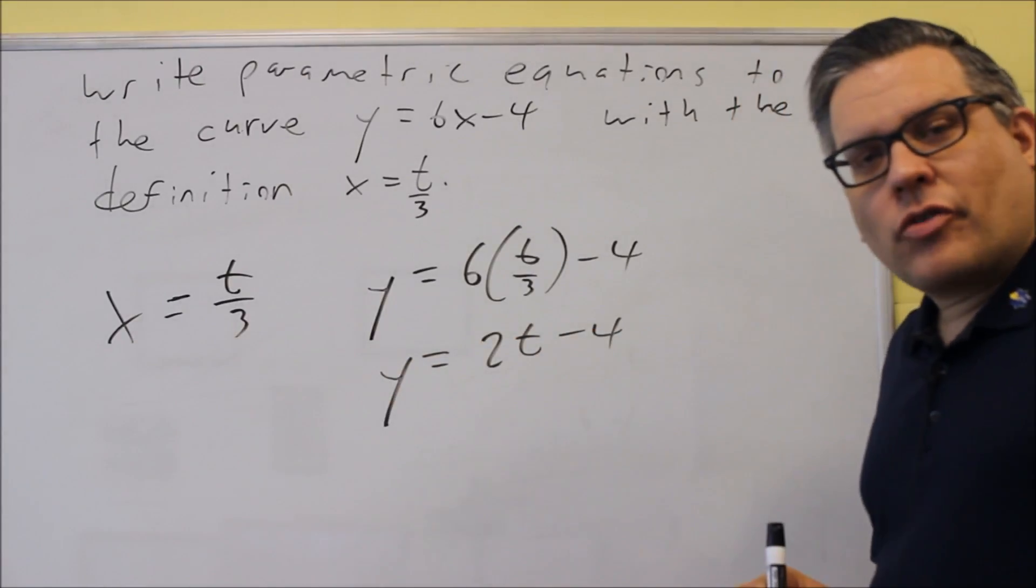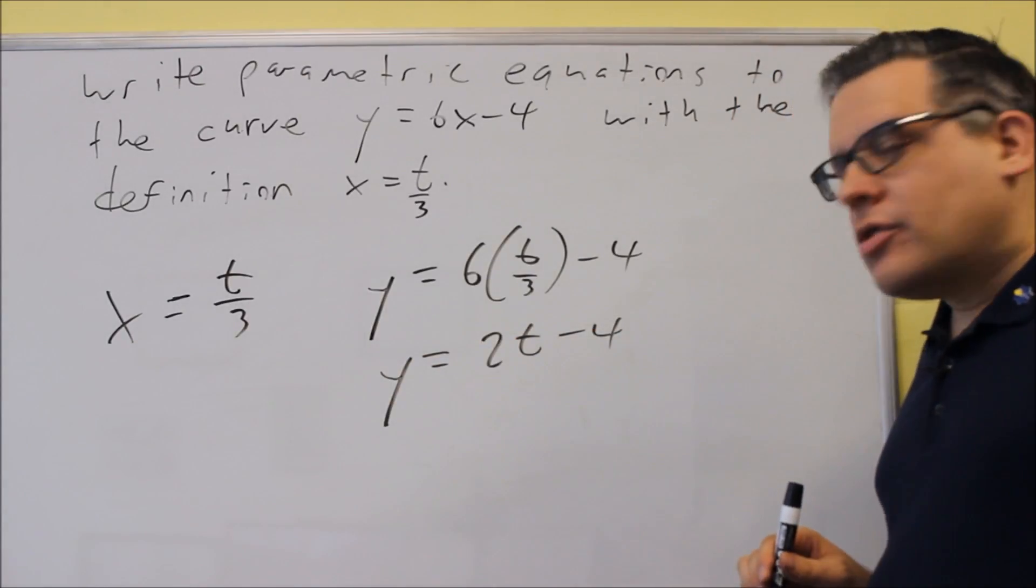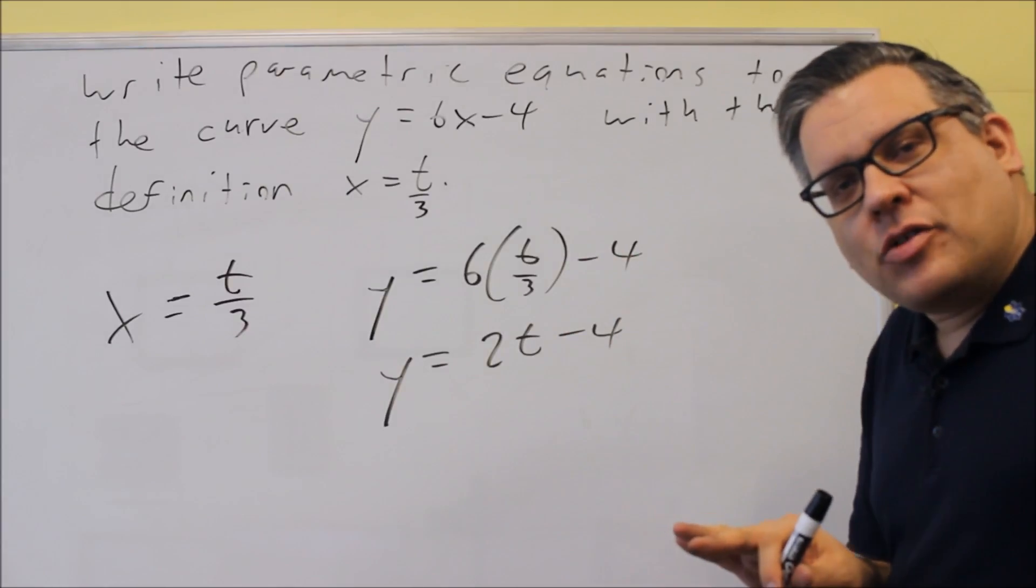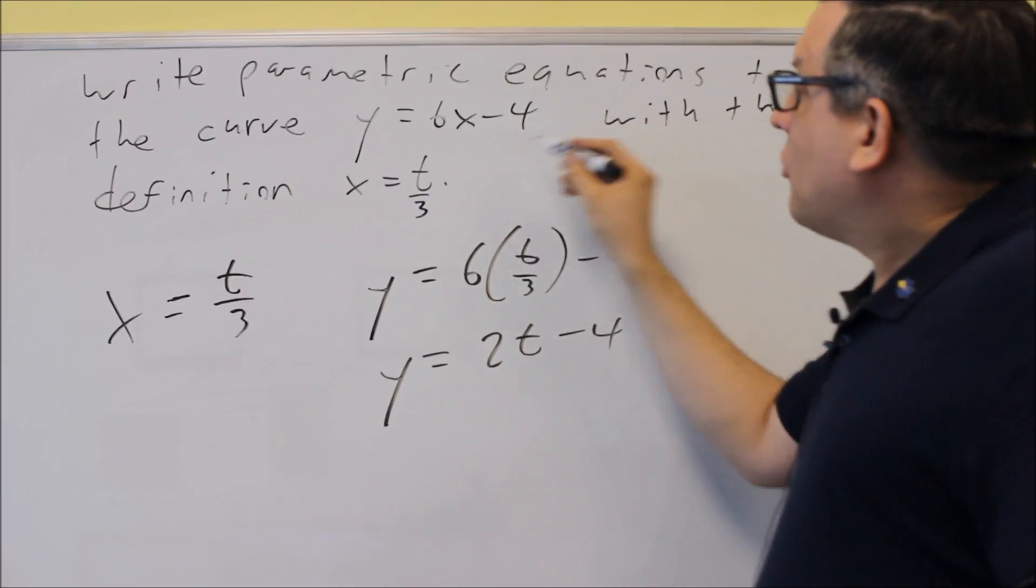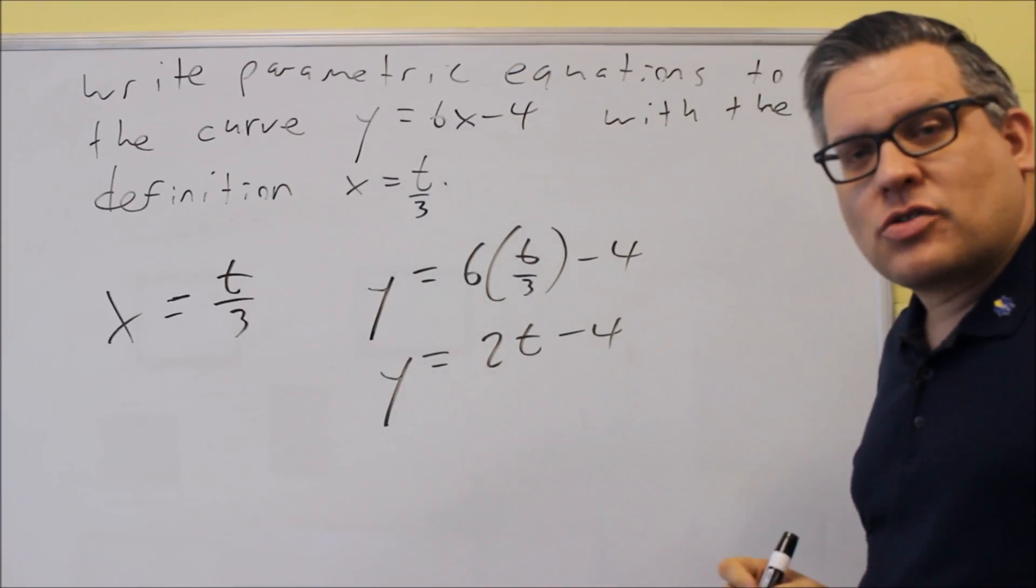x = t/3 and y = 2t - 4. If you were to make a table of values for this one, you would get exactly the same graph as y = 6x - 4.